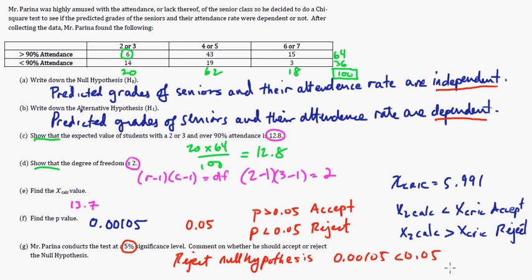Now, in this case, if you had to prove it, you would say 13.7 is greater than 5.991, so you would reject. Notice in both cases, we reject it. Obviously, you're going to reject because we're going to reject this, because attendance rate and grades matter, man. You got to go to class.